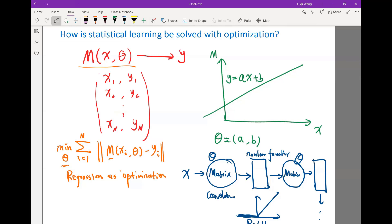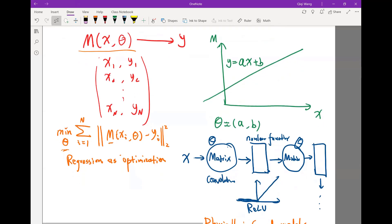last lecture we discussed how to solve quadratic optimization problems very efficiently. And in the linear model case, in the linear regression case, this optimization, if this is taken as L2 norm and as square the norm, I get actually exactly a quadratic minimization problem, which I can solve using Newton's method for one step. So, this is a regression.